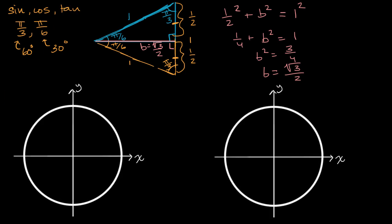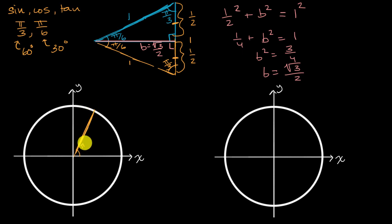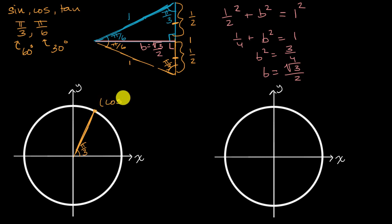Here I have two unit circles — I'll use one for each angle. First, let's think about pi over three radians. Pi over three looks something like this on the unit circle. The cosine and sine can be determined by the x and y coordinates of the point where this radius intersects the unit circle — those coordinates are cosine of pi over three and sine of pi over three.